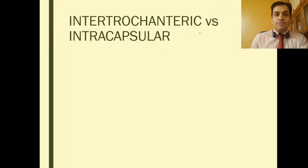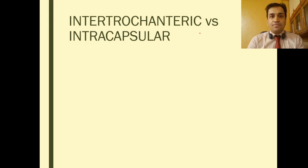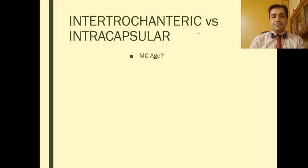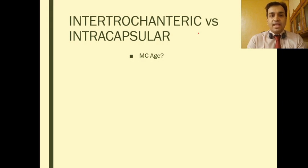Now we need to compare intertrochanteric versus intracapsular fractures. The best way is by comparison and contrast. Starting with age group and epidemiology: the most common age group for intertrochanteric fractures is 70 to 80 years — the 7th decade of life.